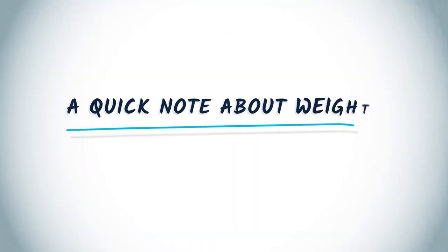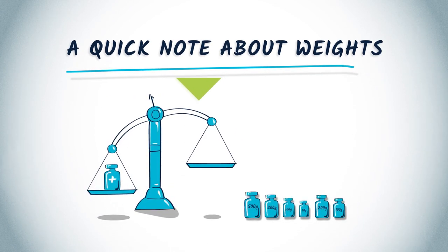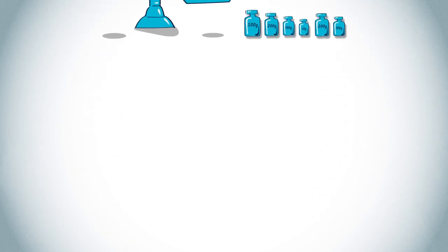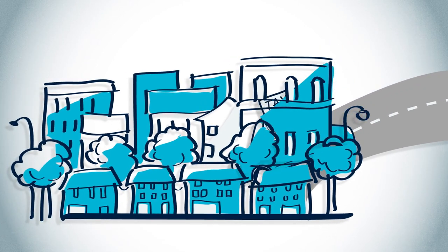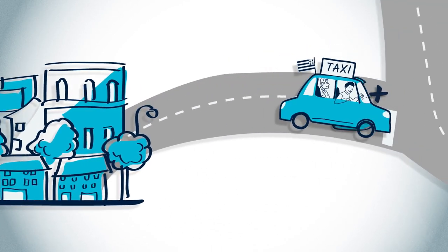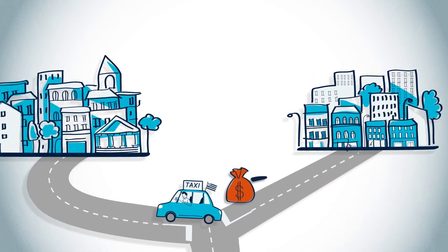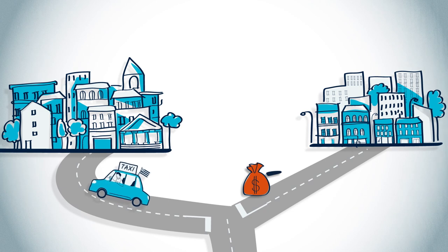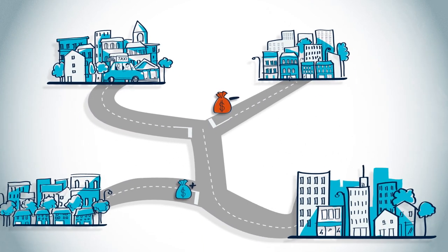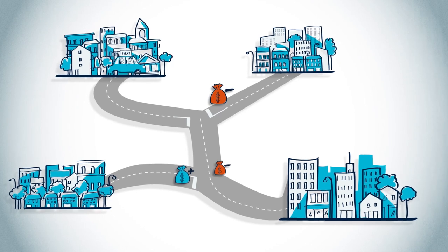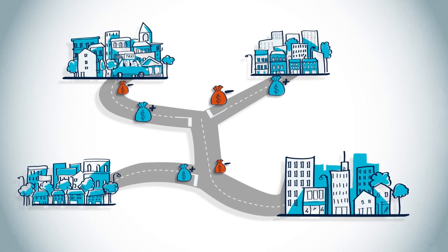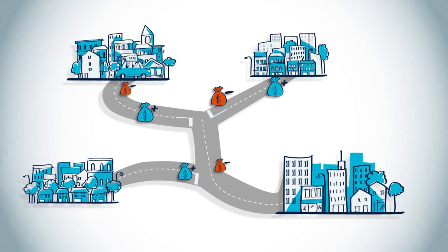A quick note about weights. So far in this MOOC, we've only considered weights that are non-negative. In some cases, it might be meaningful to add negative weights. For example, imagine a taxi driver that can travel between cities. Sometimes he earns money because he has a client, and sometimes he loses money because he travels alone. We could thus consider a graph whose vertices represent cities, and edges are weighted by the cost of the corresponding travel. Some weights would then be positive, and others negative.